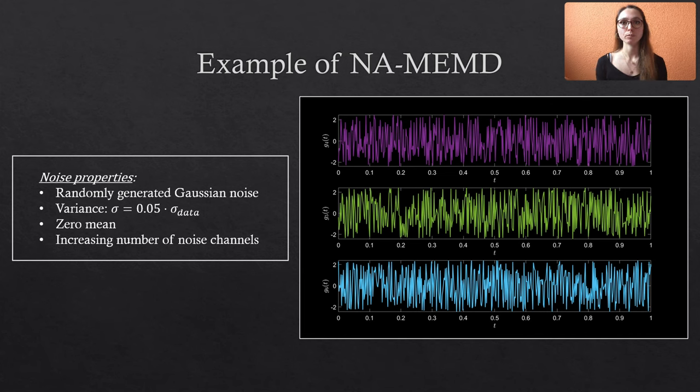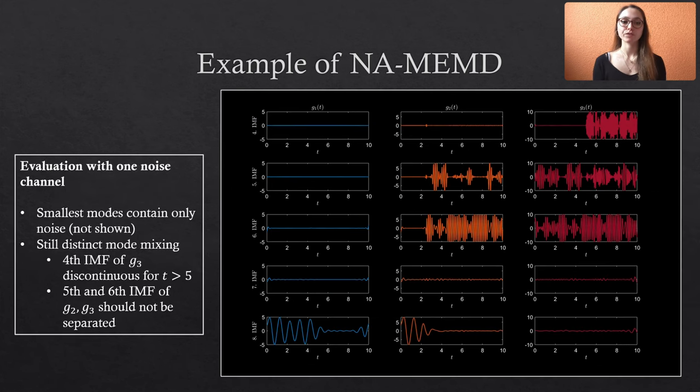In the following, we successively increase the number of noise channels from 1 to 3 to see how the mode allocation changes. And for your own data, you should see some kind of convergence as you increase the number of noise channels. So let's see what happens when we use one channel of noise in addition to our data. Since the Gaussian noise varies randomly in time, it seems to contain very high frequencies, such that the first IMFs are only noise-related modes. In the present example, IMFs 1 to 3 contain fine-scale noise and the respective modes related to our actual data are just constantly zero, which is why I didn't show them.